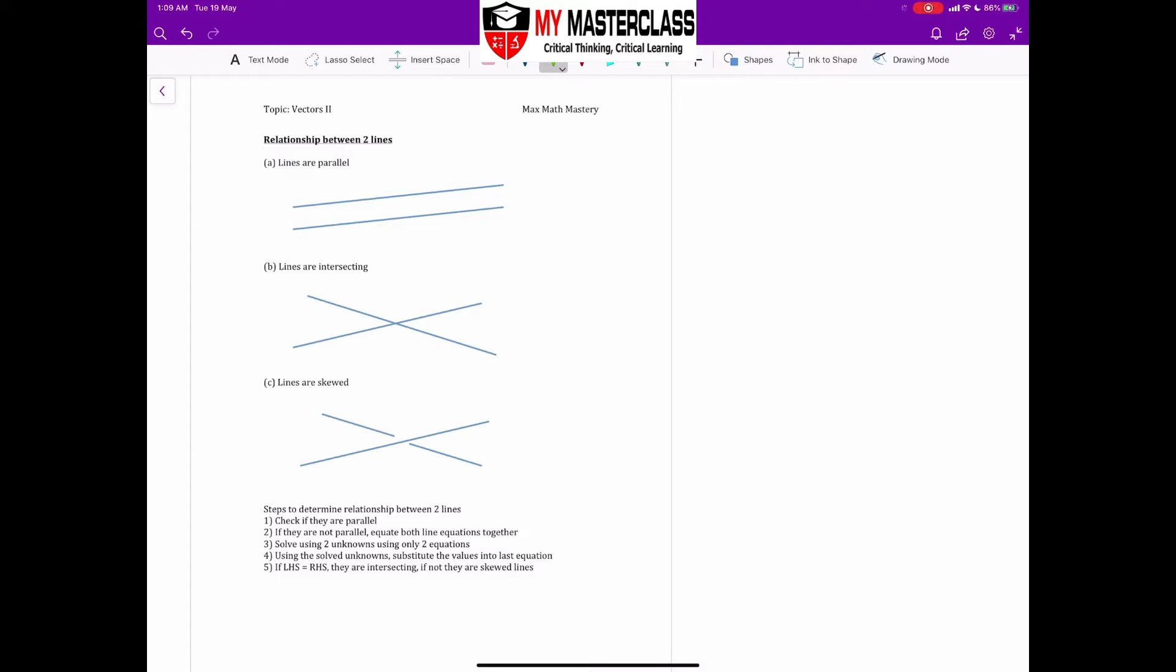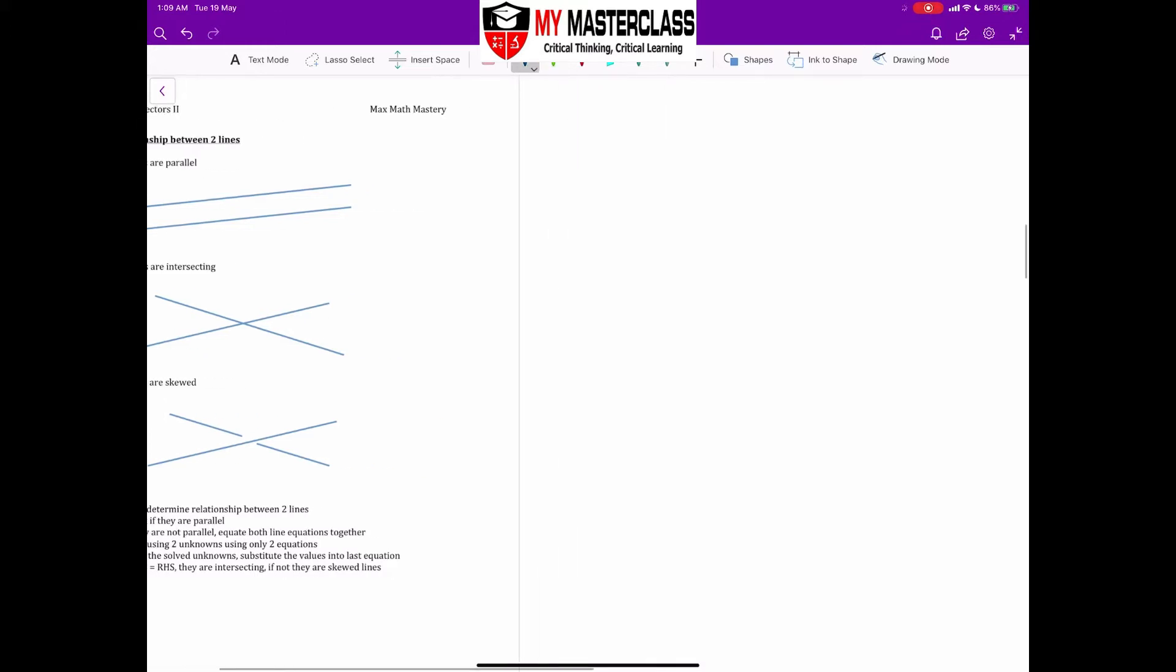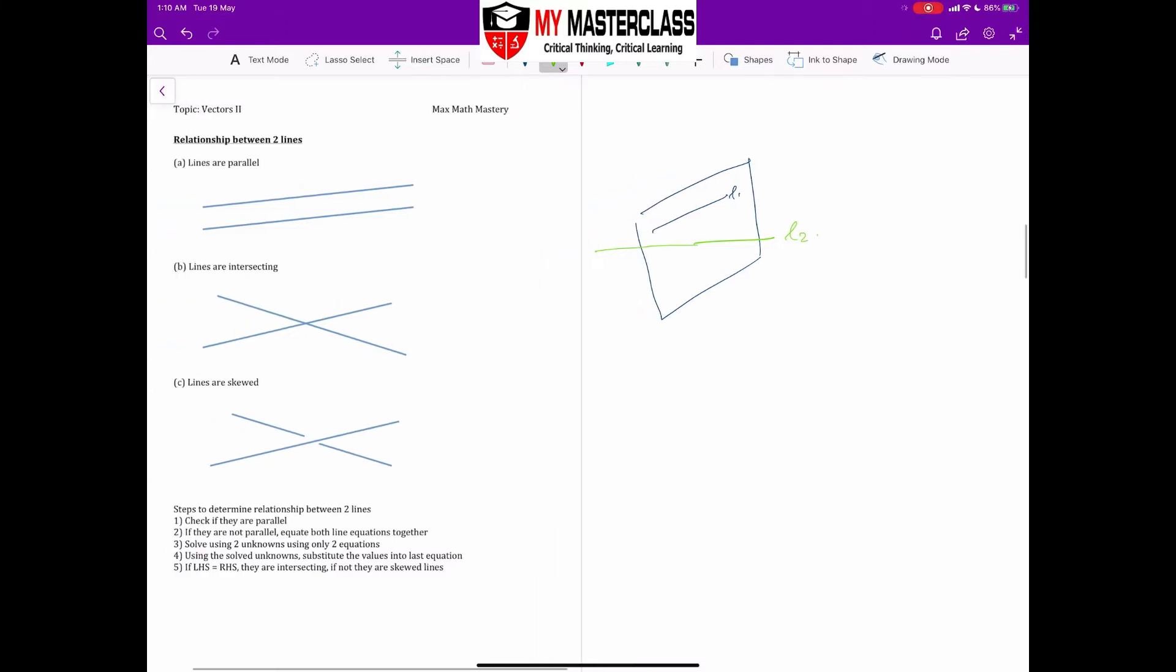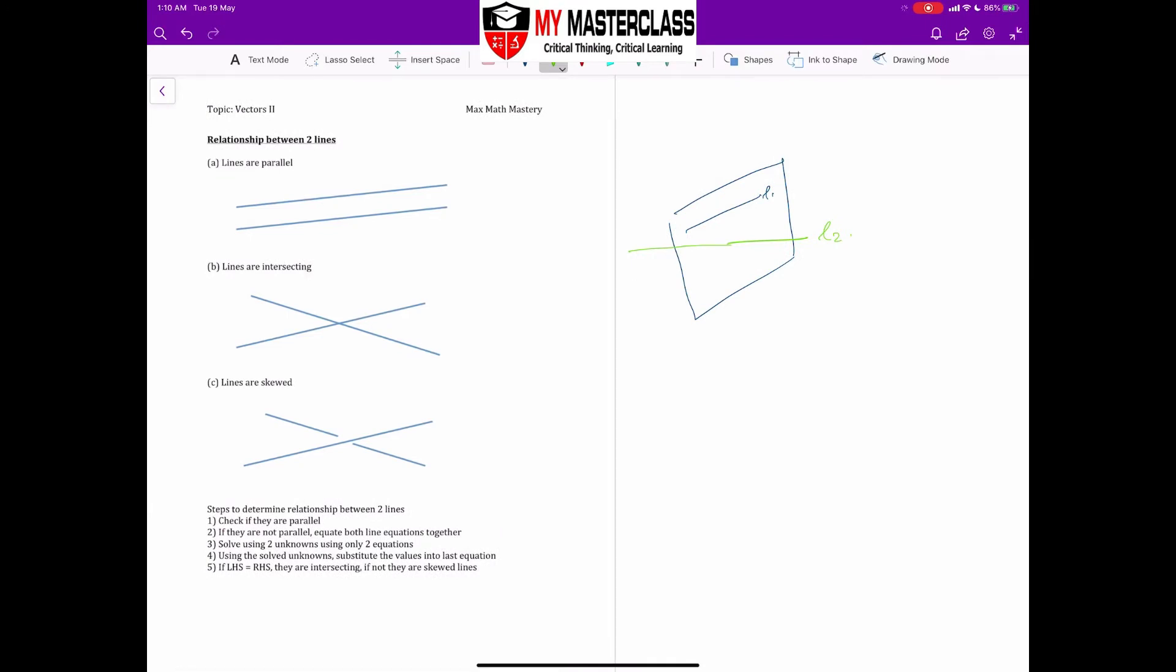For line parallel and line intersecting, I'm pretty sure it's quite obvious. But for part C, lines are skewed, it simply means that the lines are lying on different planes. So for example, over here, this can be a plane. Line 1 can lie on here, and line 2 essentially can be something like that. So even though they are not parallel, they will never intersect at all because they are on a different plane. This we'll be learning further when we go on to vector 3.